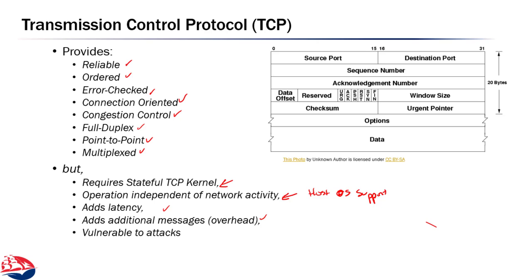TCP is also vulnerable to attack. If you can spoof the data, you can at least confuse the server, and if you're really careful, you could actually compromise a connection and take over the data — just by filling in the source address, port, and other fields in exactly the right way. We'll see some of the techniques used to limit this.